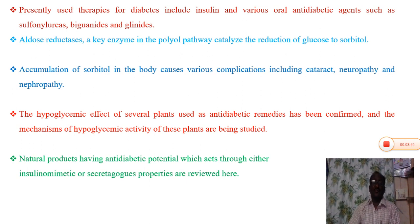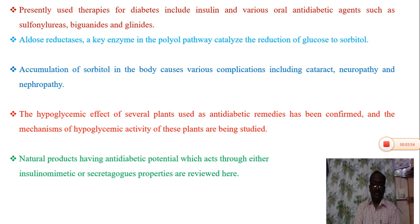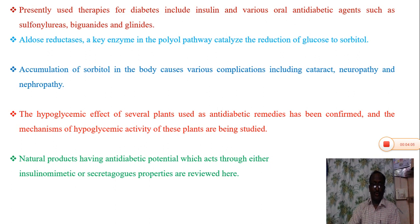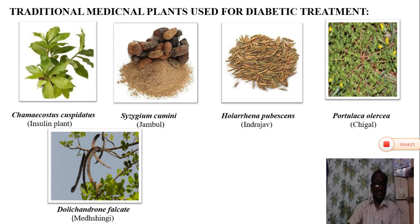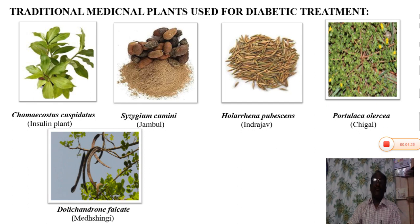The hypoglycemic effects of several plants used as anti-diabetic remedies have been confirmed, and the mechanism of hypoglycemic activities of these plants have been studied through research and surveys. Natural products have anti-diabetic potentials which act through either insulin-mimetic or secretagogue properties, and these are reviewed here. This review also focuses on the role of traditional therapeutics and natural medicinal plants for diabetes.